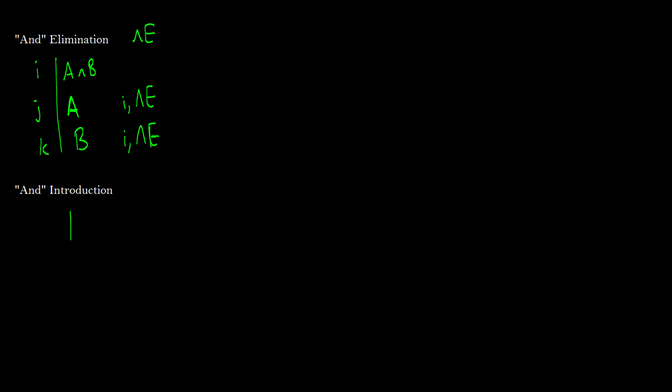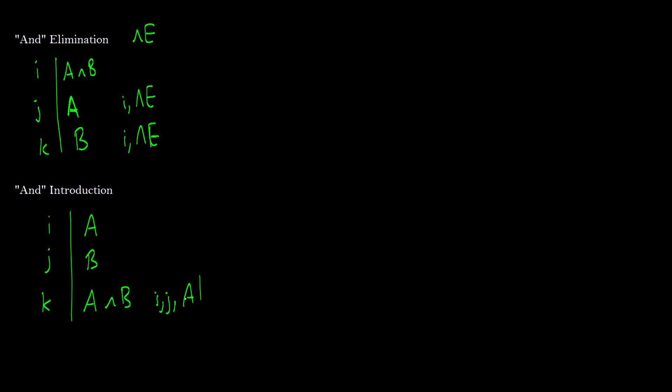And introduction states that if you have three lines, I, J, and K, if you have A on one line and B on another line, you can put them together to get A and B. So we have I and J, and this is and introduction. So every elimination rule has an introduction rule. So this is the opposite. So if you have A and B, then you can get A and B.